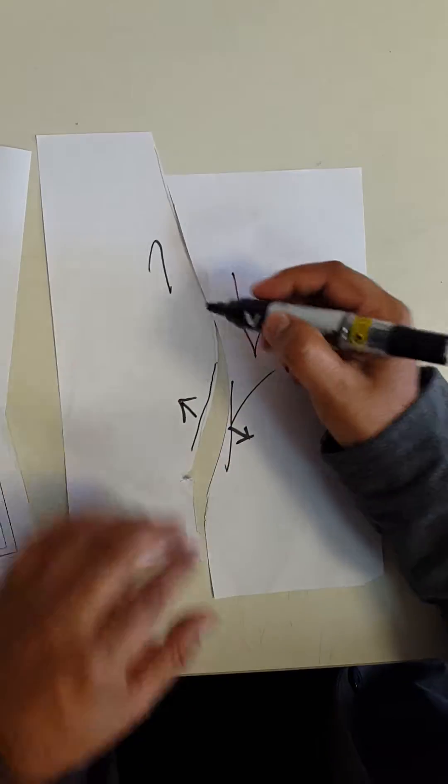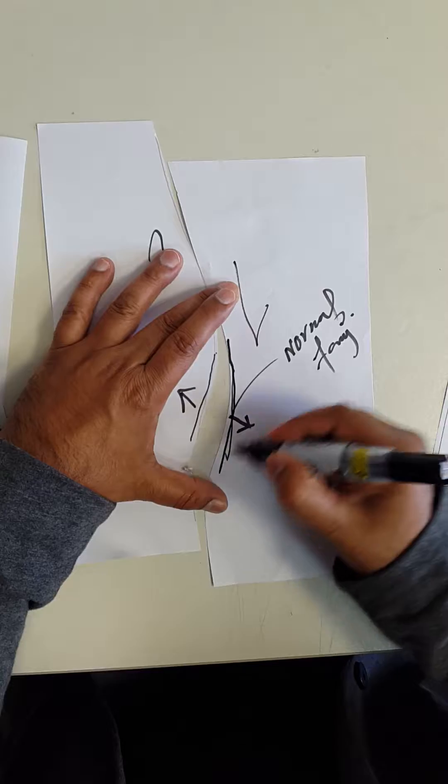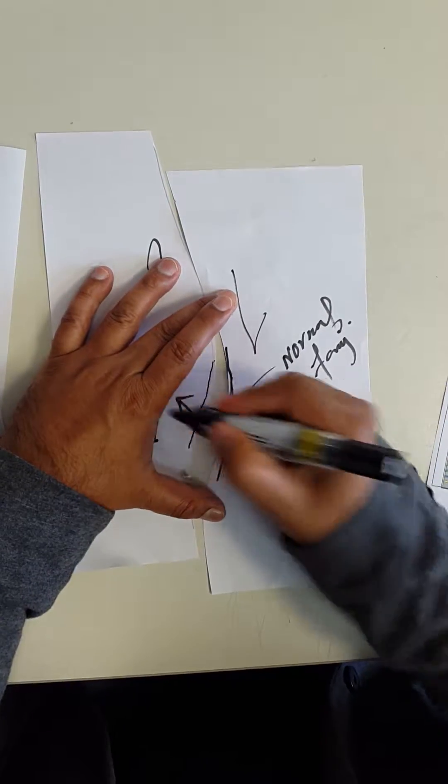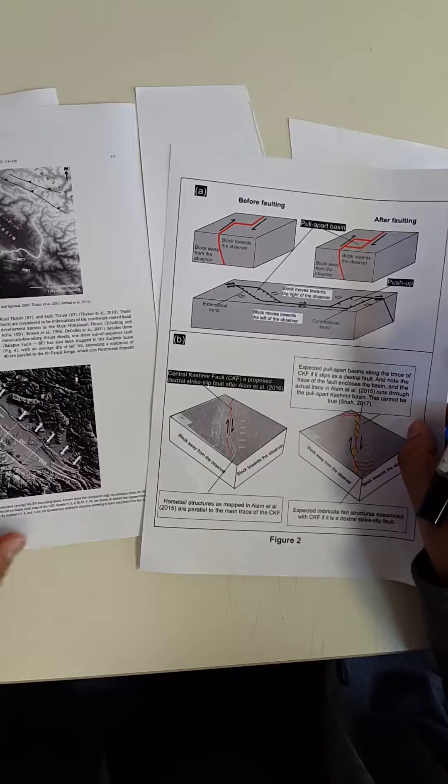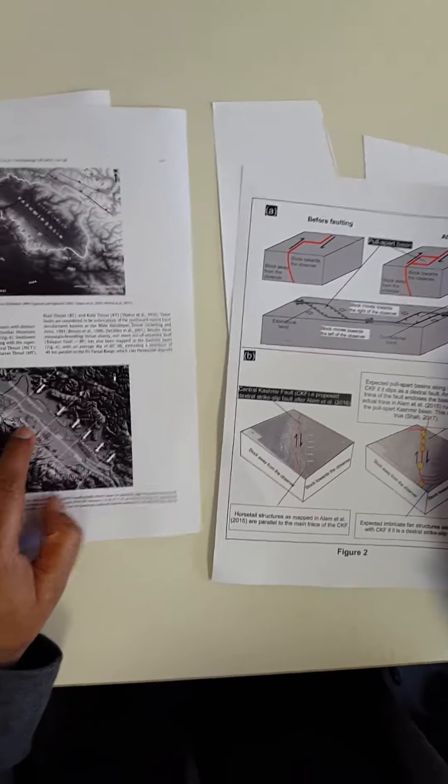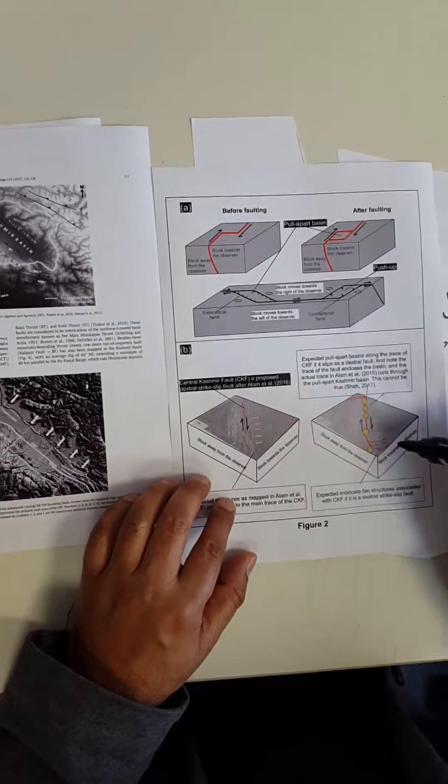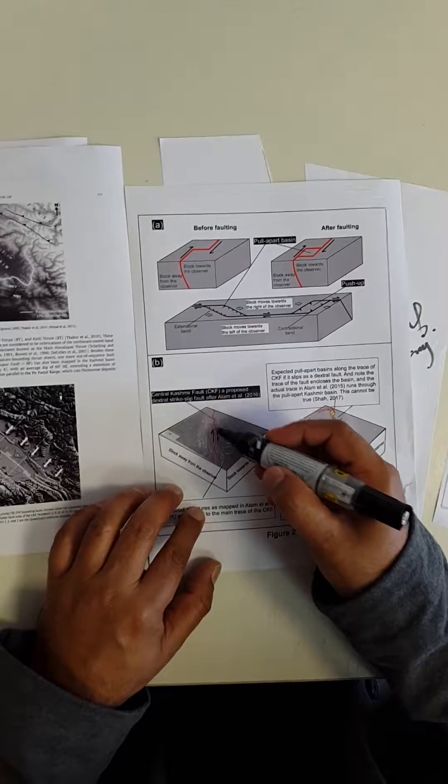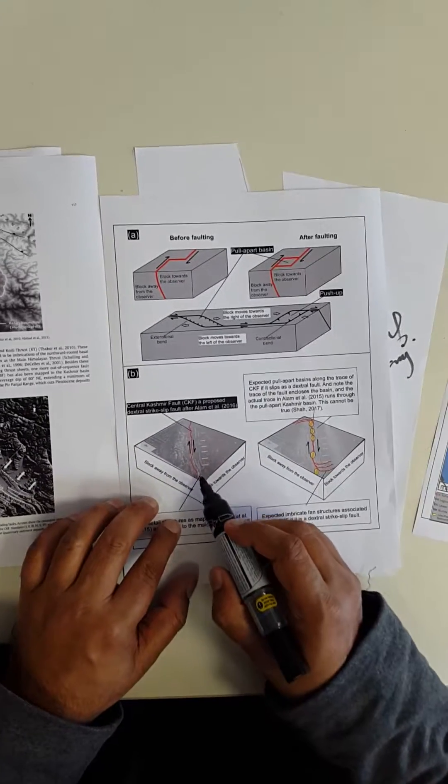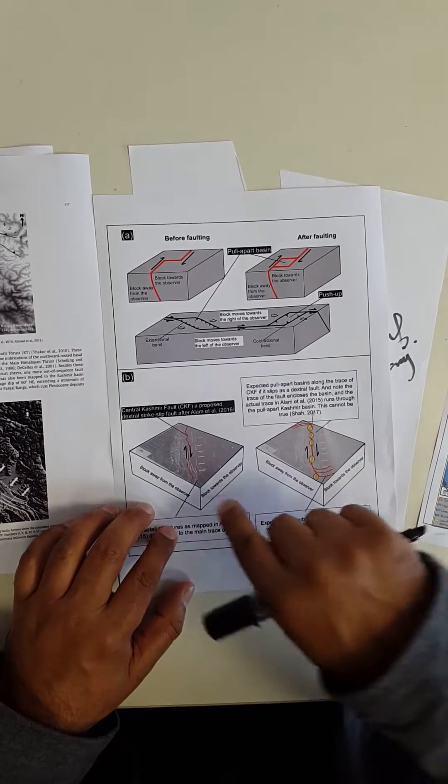And the margins, so the margin will be the actual strike-slip fault. They have that in the center, as you can see here in this case. Now, other problem with this is that, as I've highlighted here, for example, debris fans.